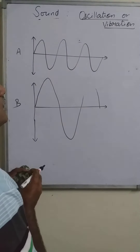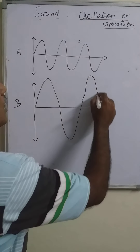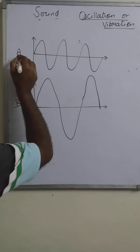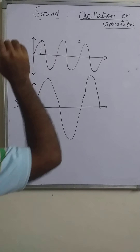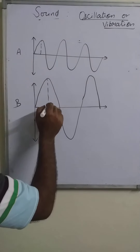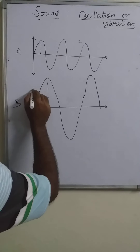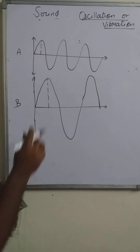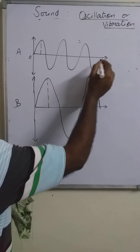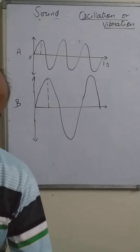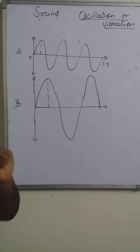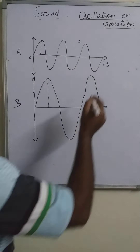What is the difference between these two vibrations? For object A, the amplitude of vibration is a certain amount; for object B, the amplitude of vibration is greater. Coming to the number of oscillations: if we consider this time span as one second, object A completes three oscillations in one second. So the number of oscillations per second for object A is three.